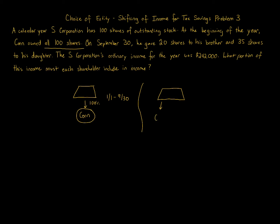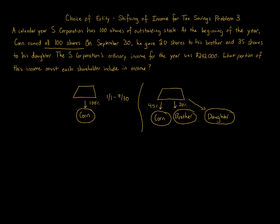Corn now owns 45 shares — so Corn owns 45 percent. Corn's brother, also an individual, owns 20 percent. Corn's daughter owns 35 percent. This structure applies from October 1st through December 31st. The question asks what portion of the income each shareholder must report — and there's $242,000 of income to allocate.